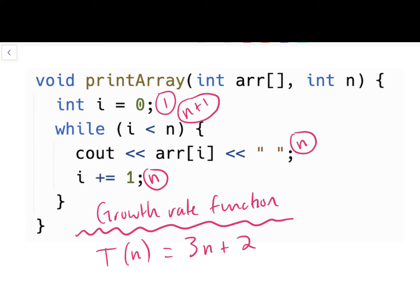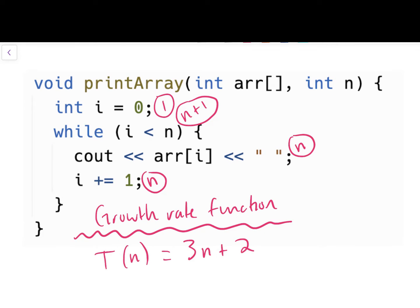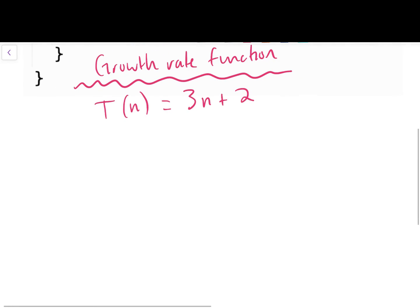The notation used for a growth rate function is capital T of n, and that would be 1 plus n plus 1 plus n plus n, which is 3n plus 2. If you'd like more practice with this idea of operation counting, I recommend checking out a previous video where I go through this with linear search. Now let's move on to the main event of today's video. How can we use this growth rate function to determine the efficiency of an algorithm? Let's title this section Introduction to Algorithm Analysis.